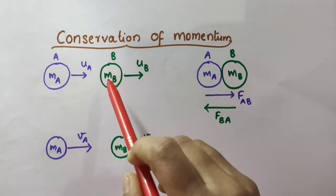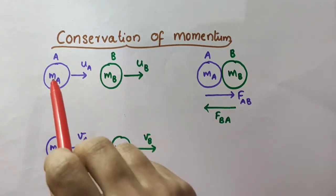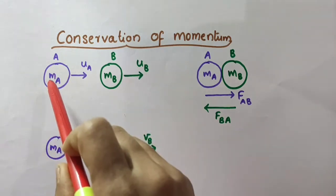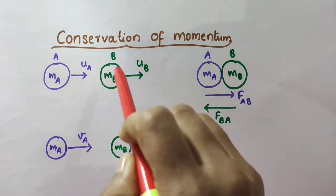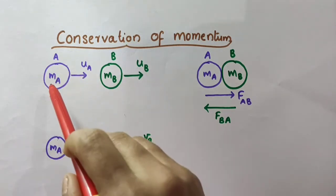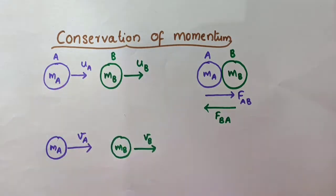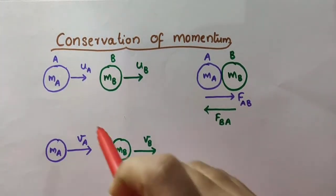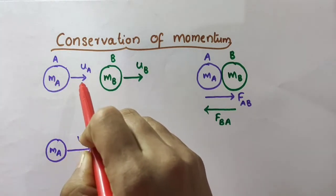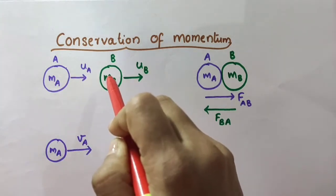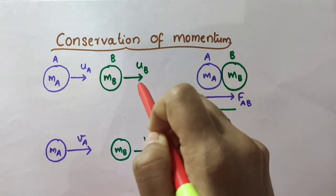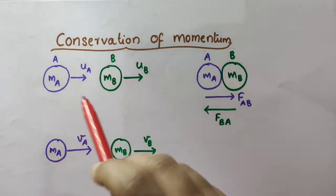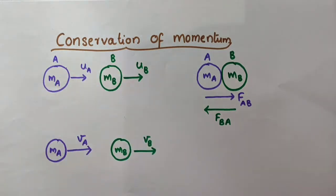Suppose two objects are travelling in the same direction along a straight line. Suppose these two objects are balls — one is A and another one is B. Let the mass of ball A be MA and let the mass of ball B be MB. Let ball A initially move with a velocity UA and ball B move with an initial velocity UB. There are no external unbalanced forces acting on these two balls.